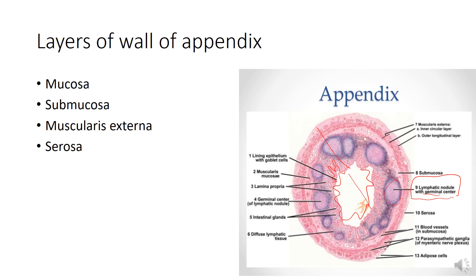Some lymphatic nodules pierce the muscularis mucosa and can project into the submucosa of the appendix. The lymphoid tissue of the appendix gradually regresses after 20 years of age, and only traces remain in elderly persons. The muscularis externa of the appendix is thin but shows the usual inner circular and outer longitudinal layers of smooth muscle; taenia coli are absent. The serosa forms the outermost layer. Students are asked in their assignment why there is so much lymphoid tissue in the appendix if it is considered a vestigial organ.